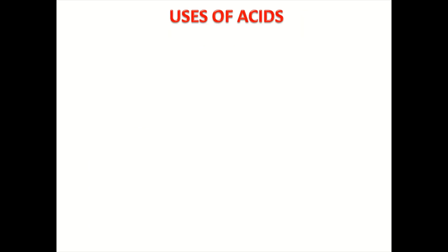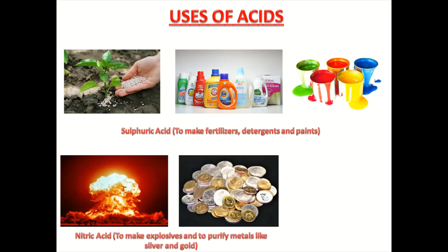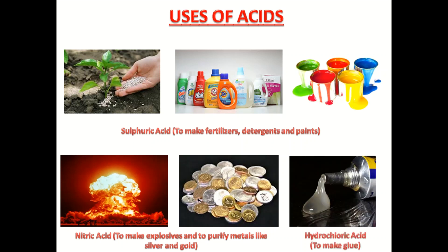Now let us see the uses of acids. Sulfuric acid is used to make fertilizers, detergents and paints. Nitric acid is used to make explosives and to purify metals like silver and gold. Hydrochloric acid is used to make glue.